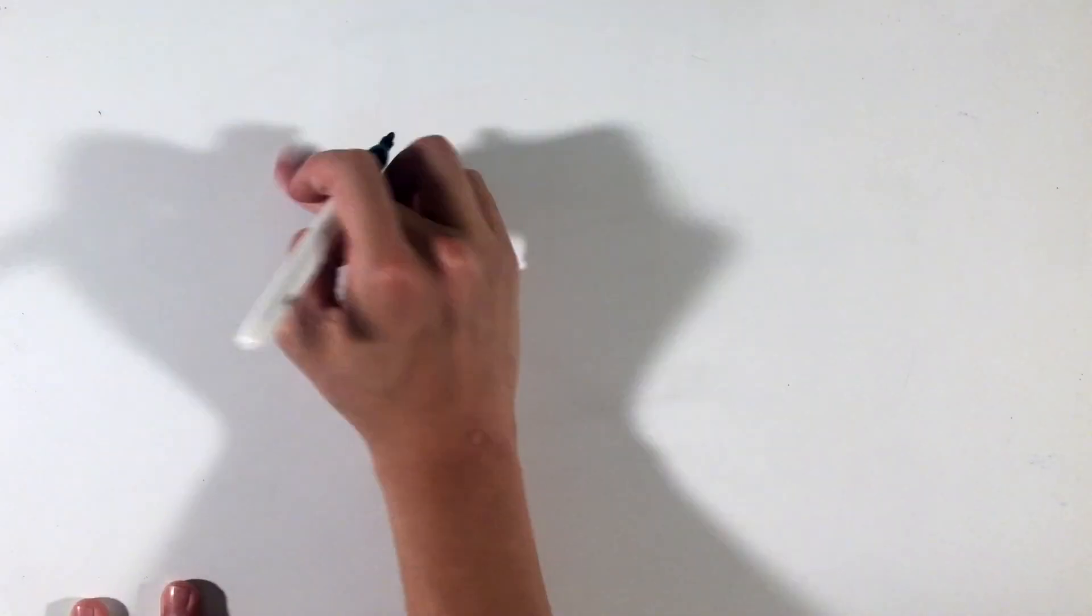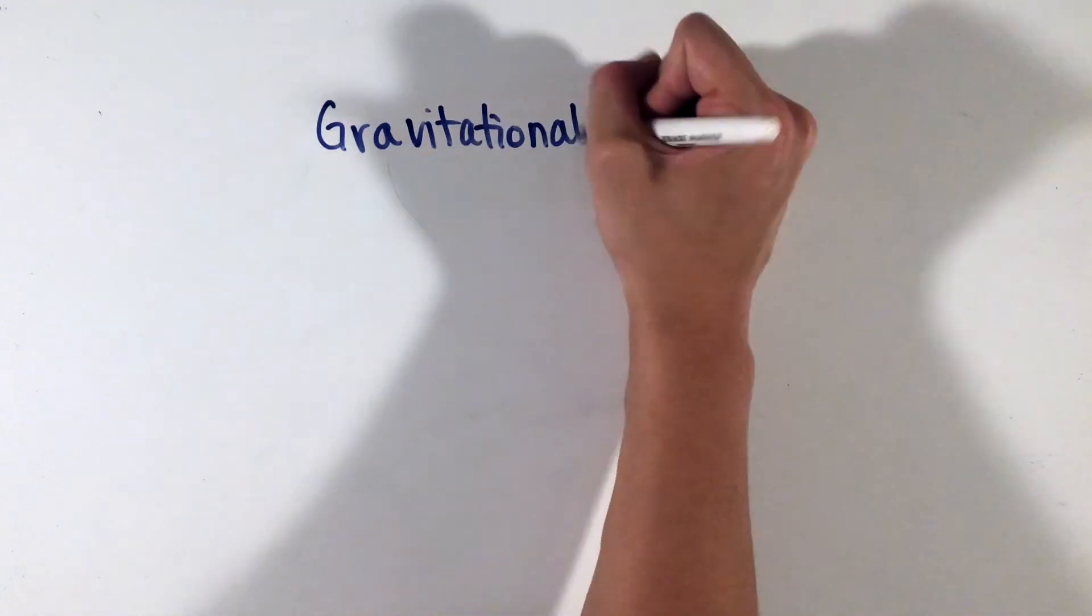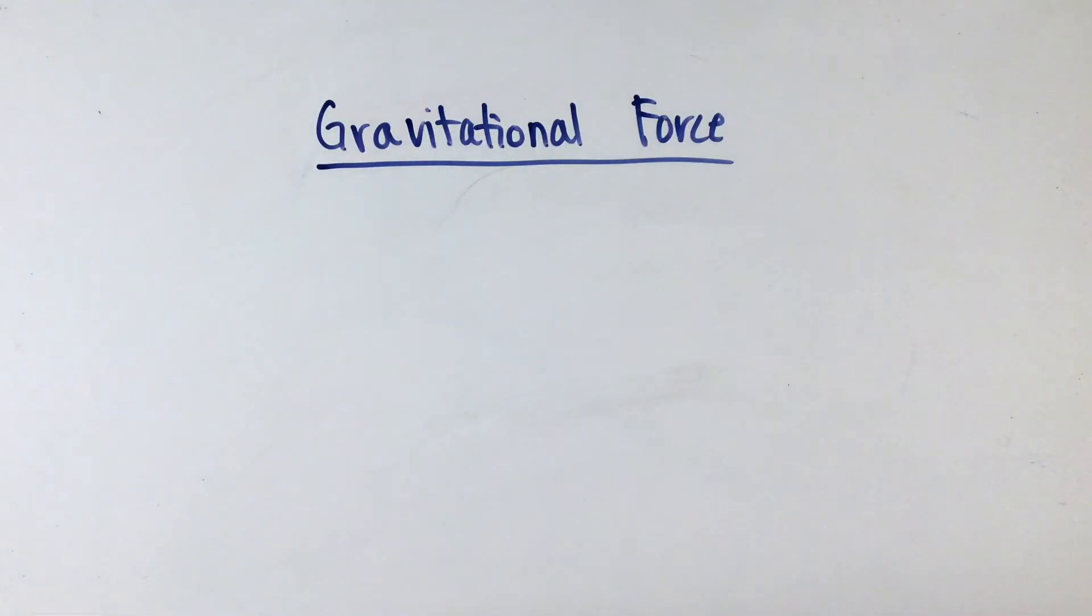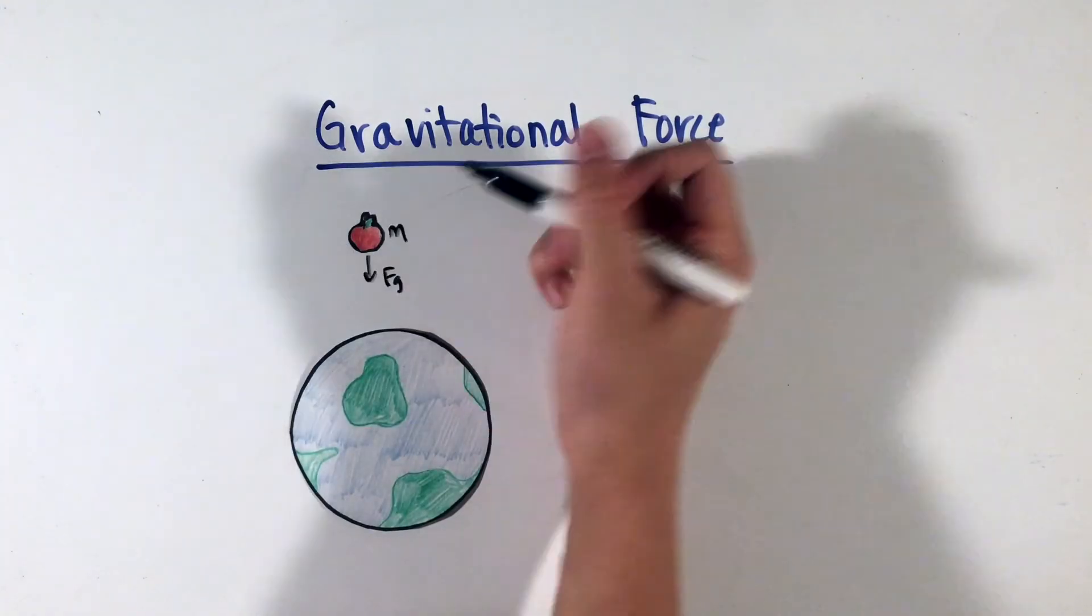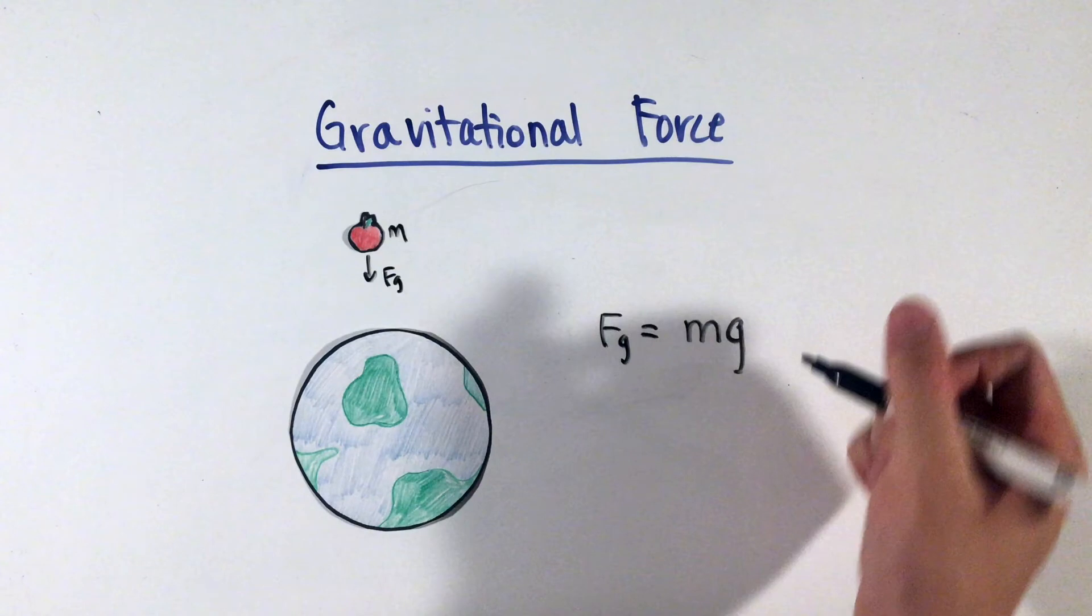Another common force that you'll find associated with any object is the gravitational force, denoted f sub g, applied by the Earth onto the object. Essentially, this is the force of gravity that pulls us towards Earth, and has a value of the mass of the object times the gravitational acceleration on the Earth's surface, or 9.8 meters per second squared.